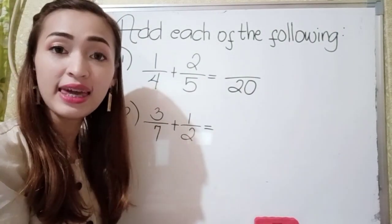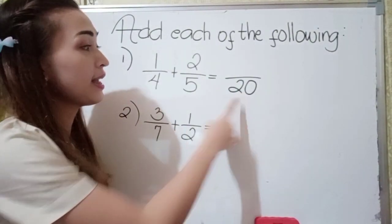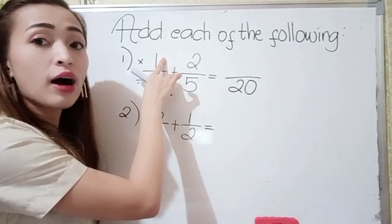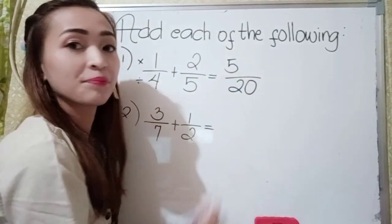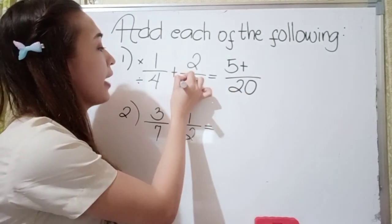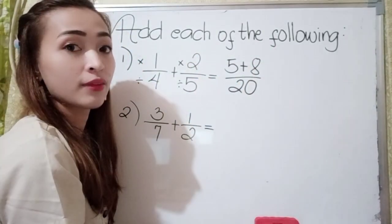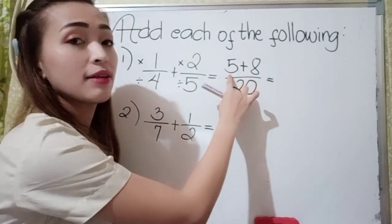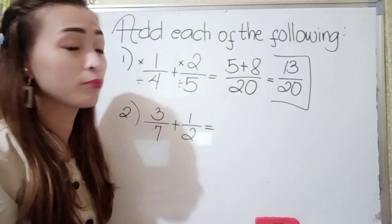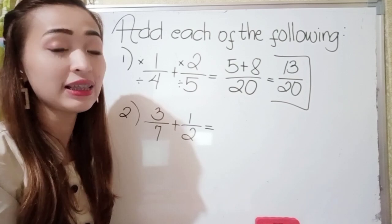Four can divide 20 and five can divide 20. So, 20 divided by four is five, and five times one is five. Then, 20 divided by five is four, and four times two is eight. Five plus eight is 13, giving us 13 over 20. Since we cannot simplify 13 over 20, our final answer for number one is 13 over 20.